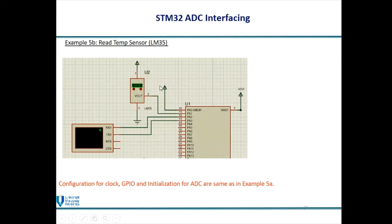Pin 2 connects to the analog input of the STM32. In this example, Example 5B, we use ADC channel AN1, which is PA1. We want to read the value from the temperature sensor and then display it in the UART virtual terminal.